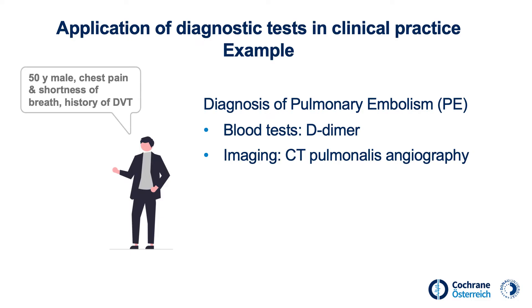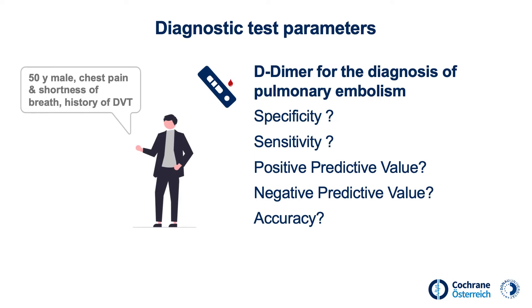The GP decides to use the point-of-care D-dimer quick test directly in their office. But how accurate is such a test? How many cases of pulmonary embolism does it miss? How many false positive results does it render? To answer such questions, we use diagnostic parameters such as sensitivity, specificity, predictive values, and accuracy.